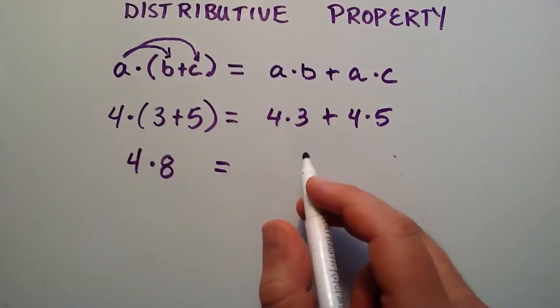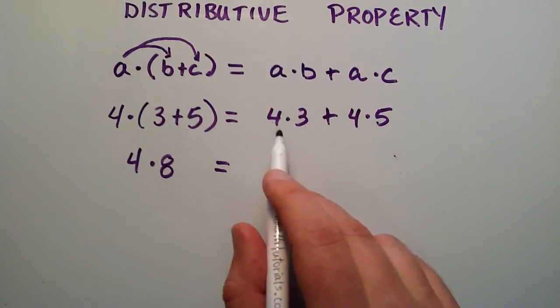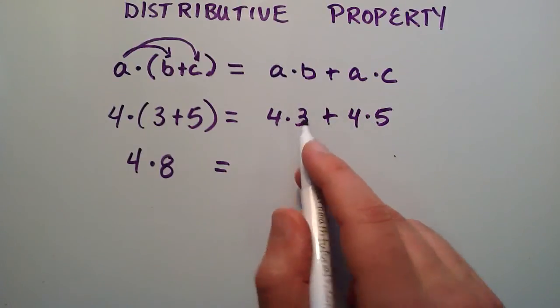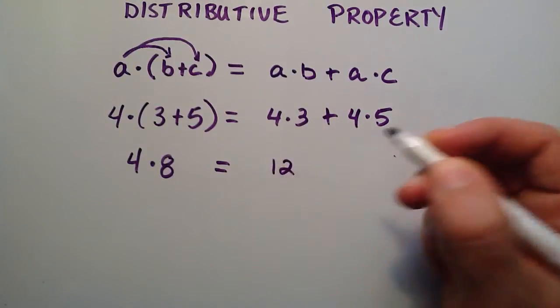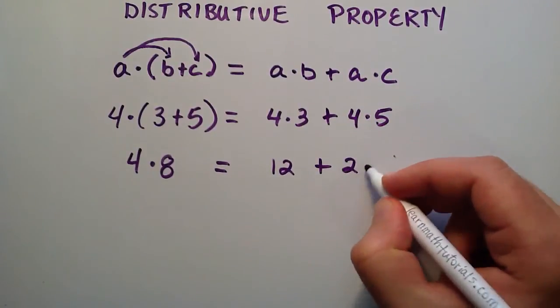And on this side we're going to do the multiplication first, because order of operations says we do multiplication before addition. So this is going to be 4 times 3, which is 12, and then we're going to add that to 4 times 5, which is 20.